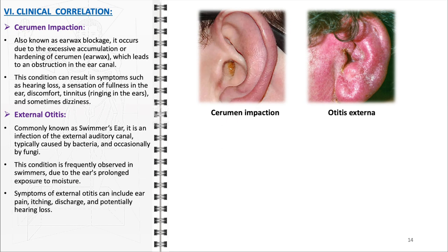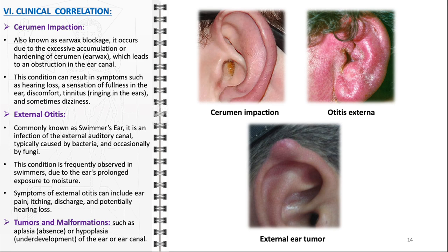In addition to these conditions, the ear can also be affected by tumours and malformations. These include aplasia, which is the absence of the ear or ear canal, and hypoplasia, referring to the underdevelopment of these structures. Such conditions can lead to significant challenges, including hearing impairment and cosmetic concerns, and often require specialised medical intervention.